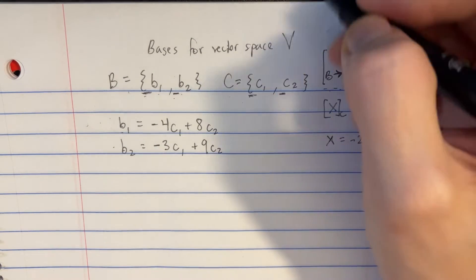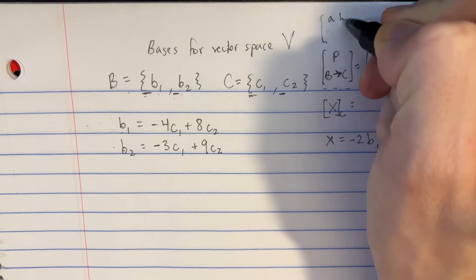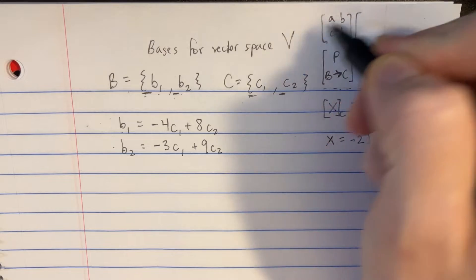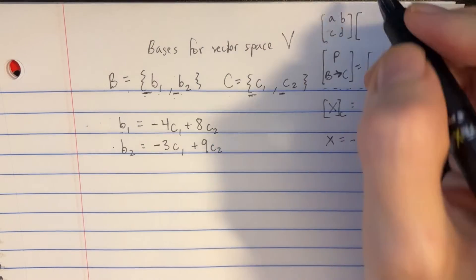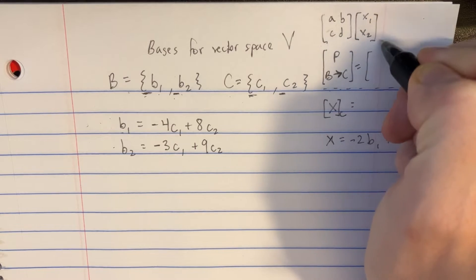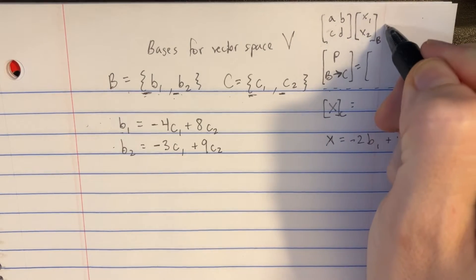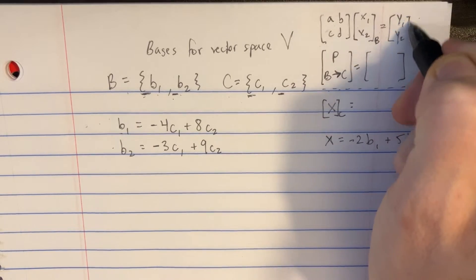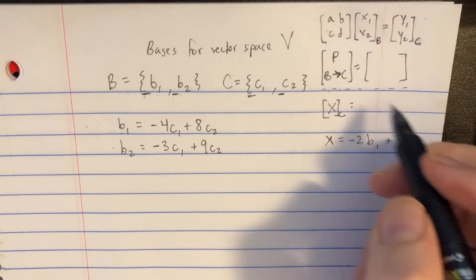The point of this matrix here is that we're going to be able to take something like A, B, C, D, some matrix over here, and then we'll multiply the two coordinates that we need from B. So we'll call it X1 and X2. That is using the B basis vectors, and then that will turn into the Y1 and Y2 using the C basis vectors.